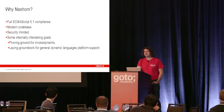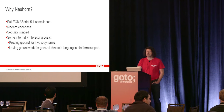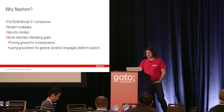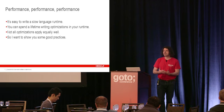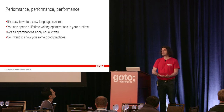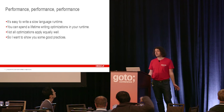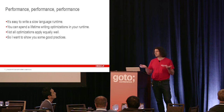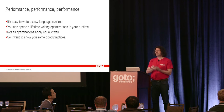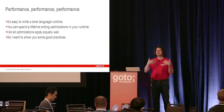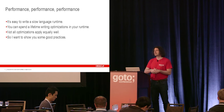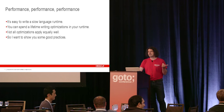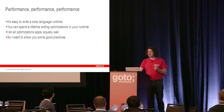We also use it as a proving ground to involve invokedynamic, and we are also using it to flesh out the requirements for general dynamic language support on the Java platform, which is pretty much my long-term goal with all of this. We do a lot of performance work. JavaScript is a wonderful target language if you enjoy doing compiler optimizations as I do, because it is super easy to write a very slow language runtime. You can spend a lifetime writing optimizations in your runtime, and the more dynamic the language is, the more work your optimizing compiler has to do to provide you with acceptable performance.